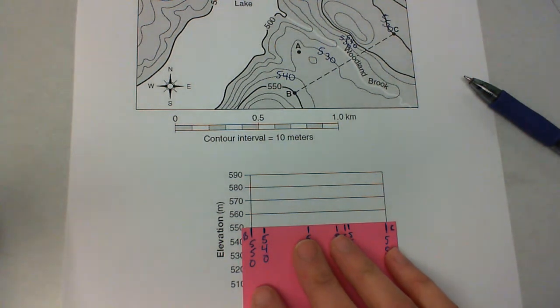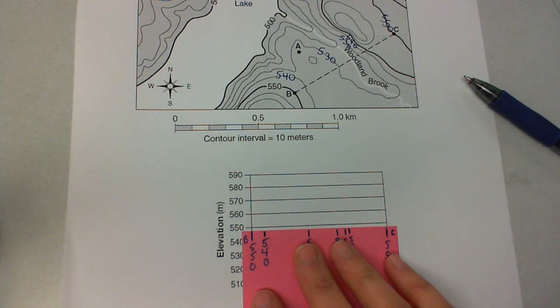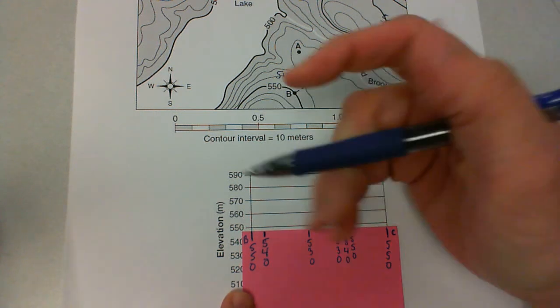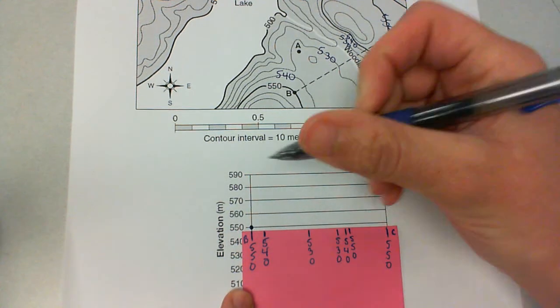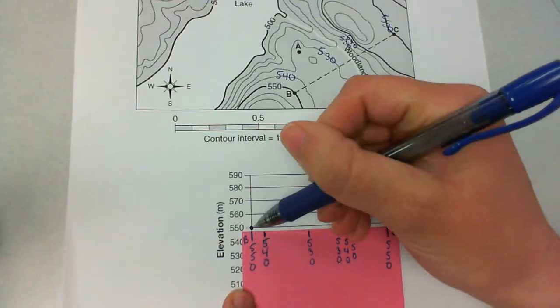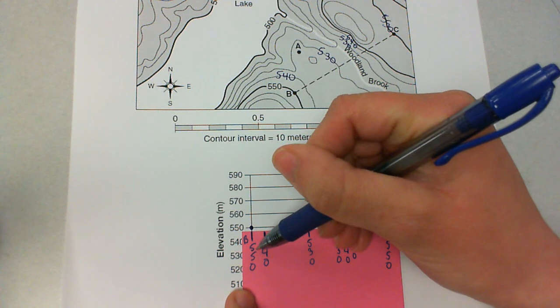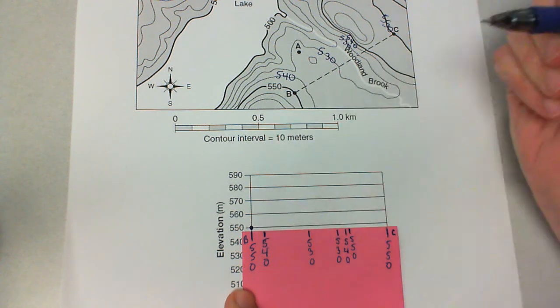Now you don't want to put it right on top of 550. You want to be just a little bit below it. And then you put your dot on the line. Your dot should not be below or above the line. It needs to be on it because if you're plotting 550, it needs to be on the line for 550.